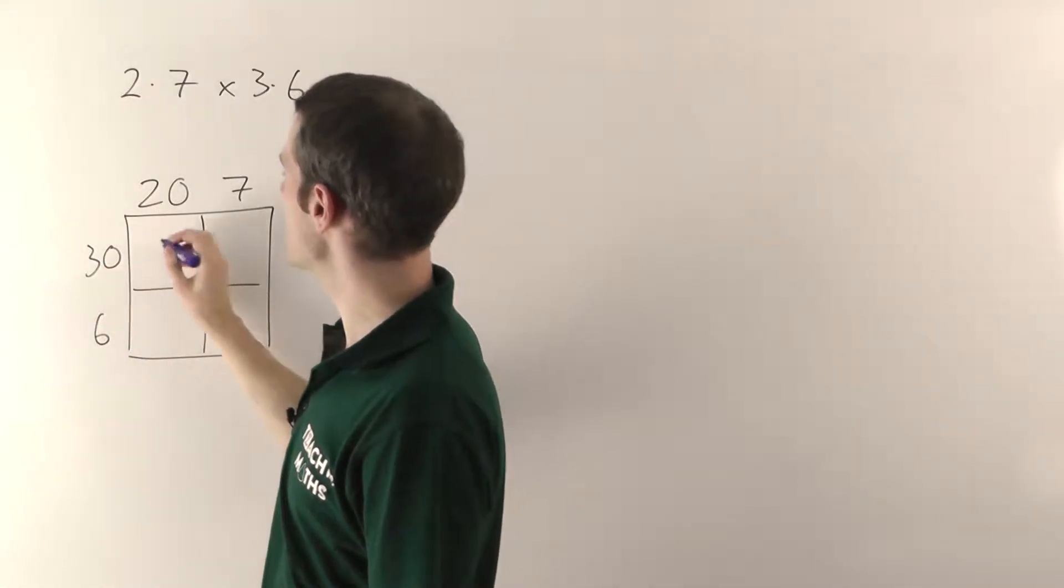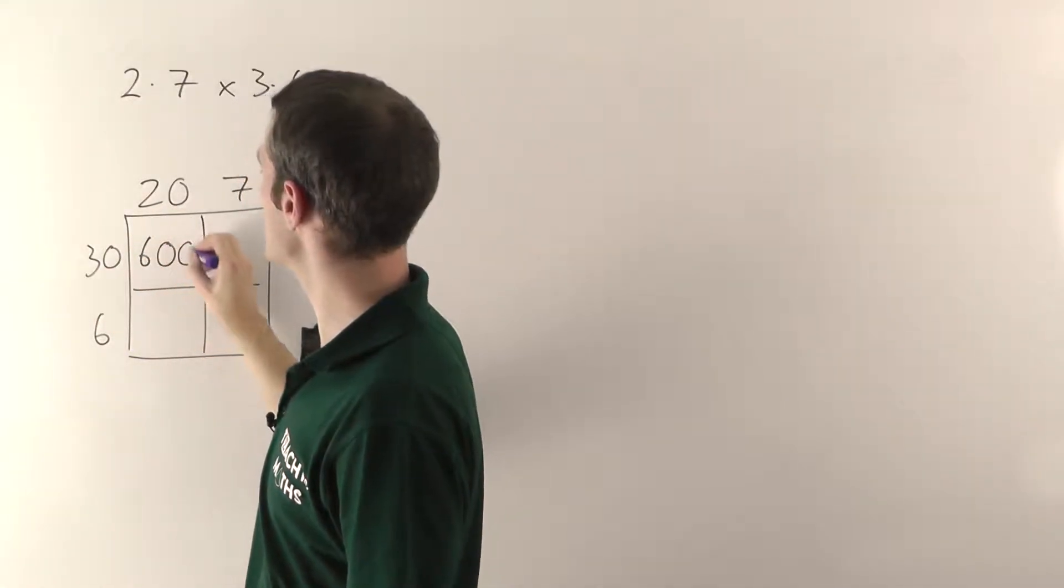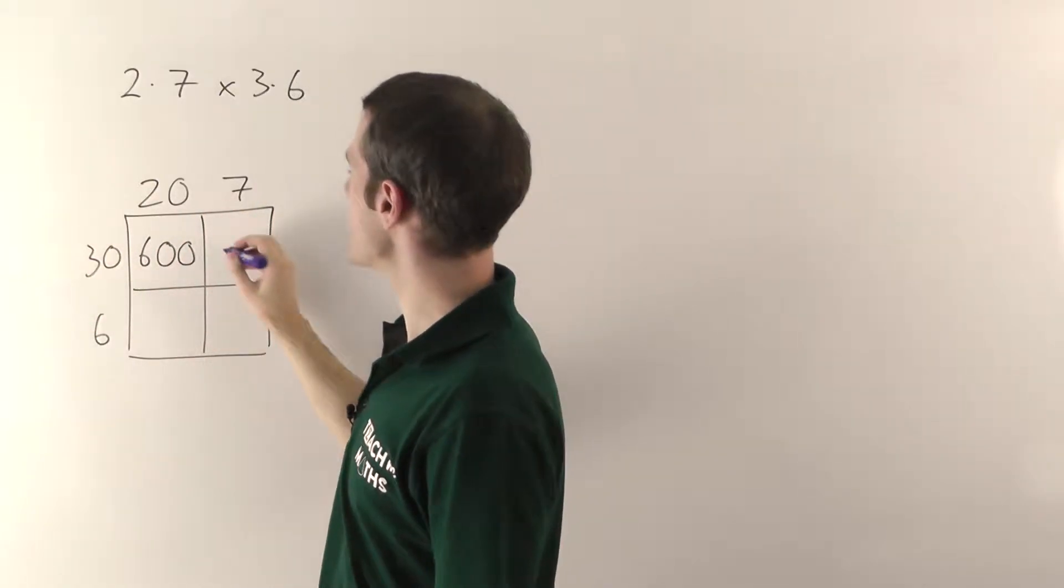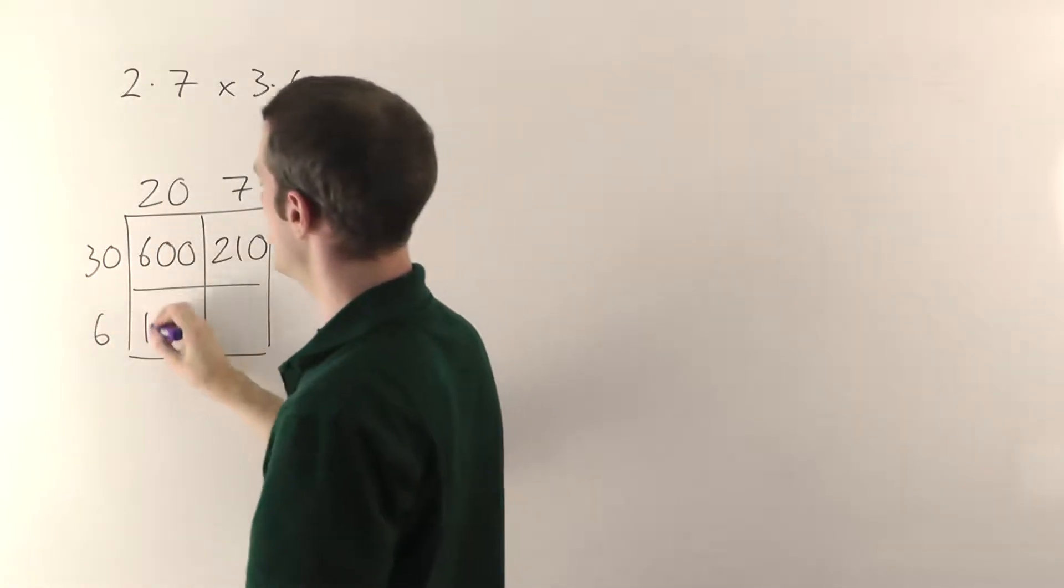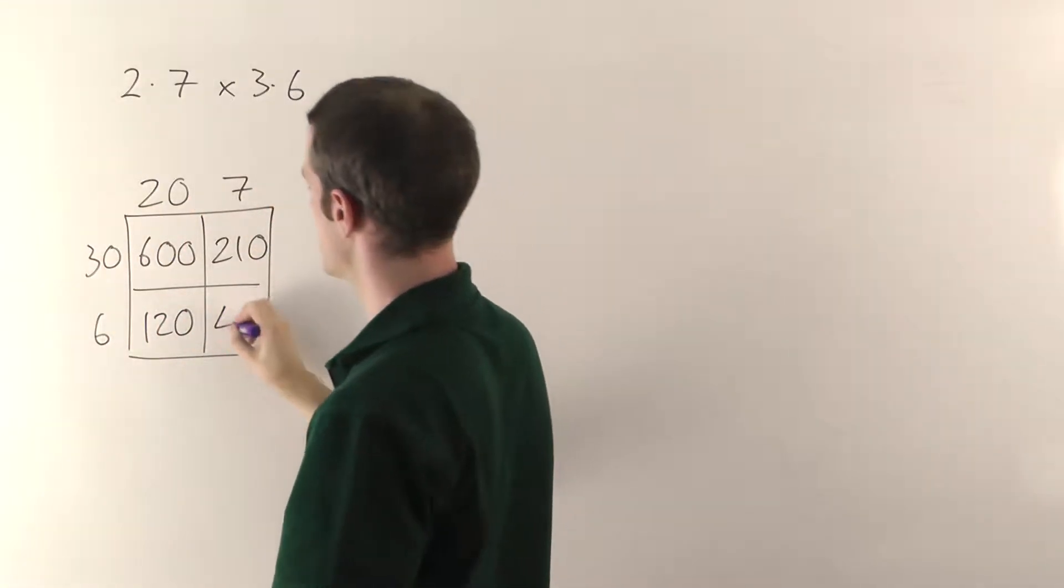So I'll do this quickly. You can watch the grid multiplication video if you want to see the details of this. So 30 times 20, well 2 threes are 6, plus 2 zeros. 3 sevens are 21, and I've got 1 zero. 6 times 2 is 12, 1 zero. And 6 times 7 is 42.